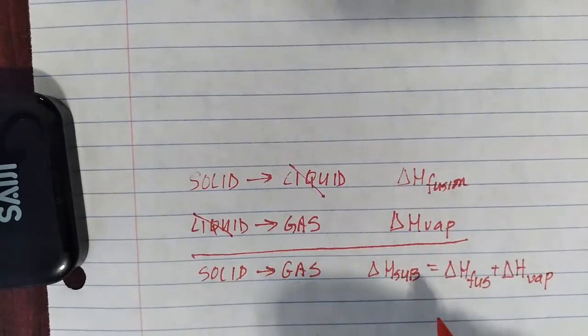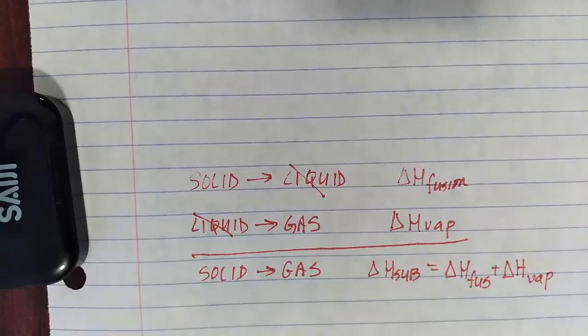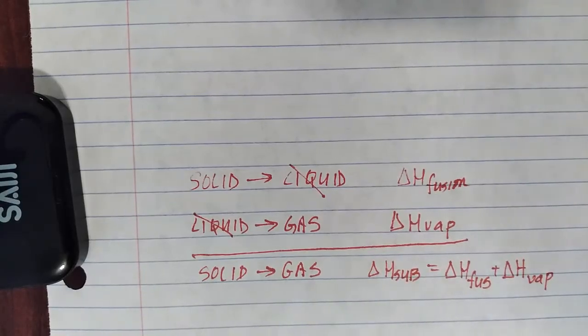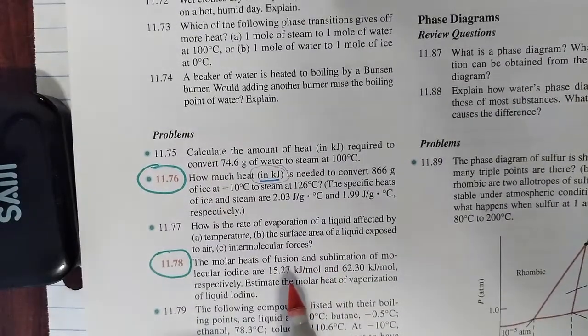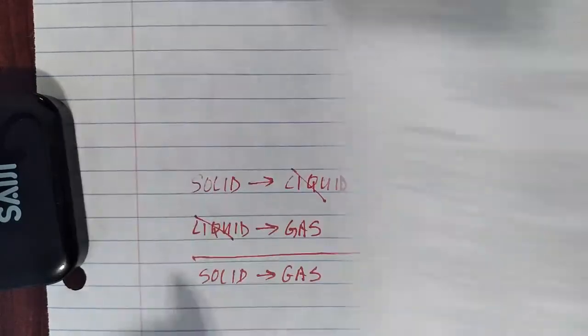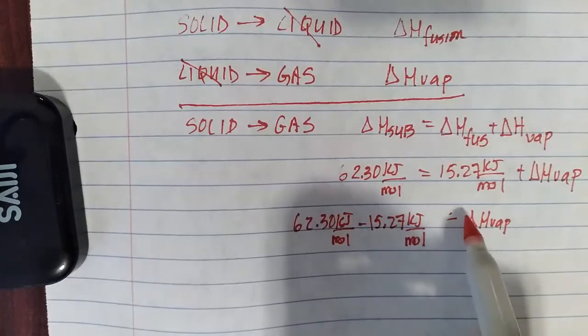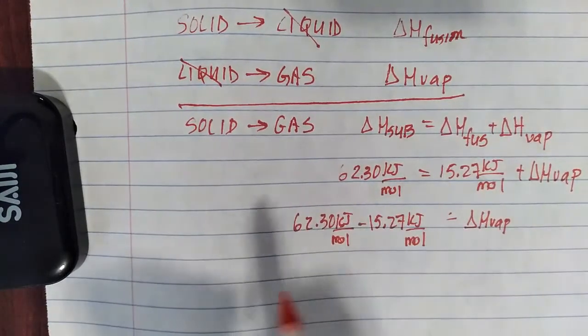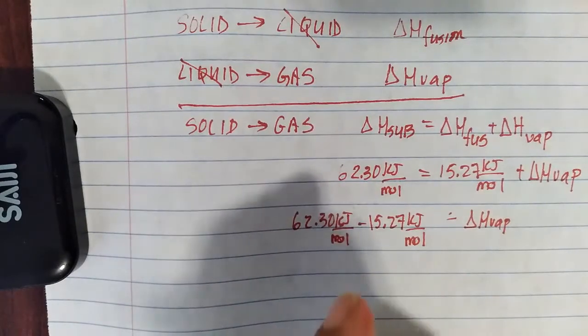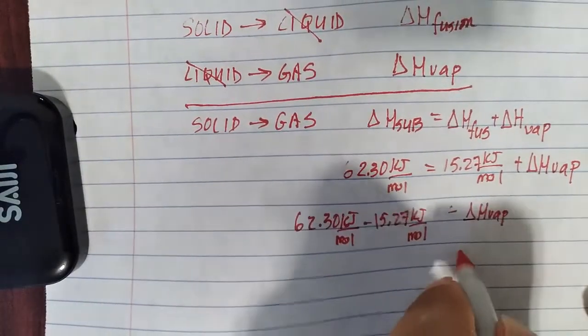So delta H sublimation is delta H fusion plus delta H vaporization. So in this problem, they actually give us the delta H of fusion. So that is 15.27 kilojoules per mole. And so delta H of vaporization is going to be 62.30 kilojoules per mole minus 15.27 kilojoules per mole.